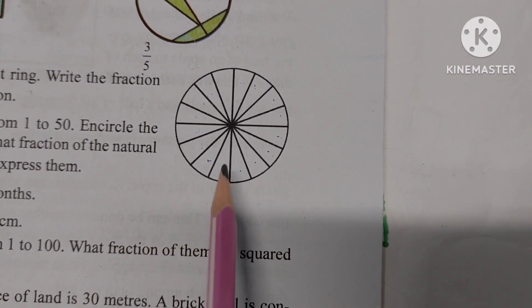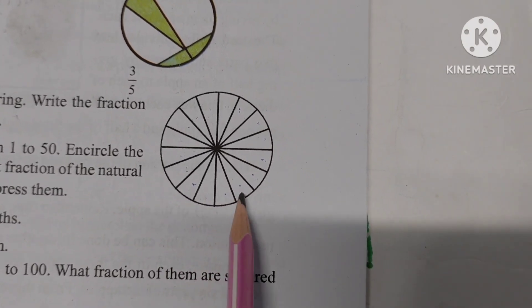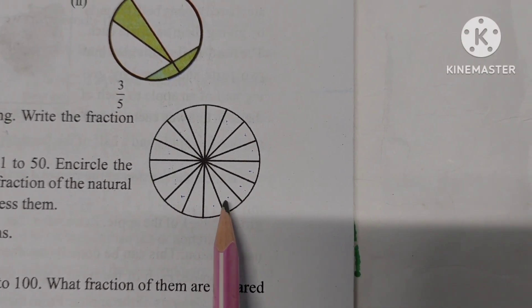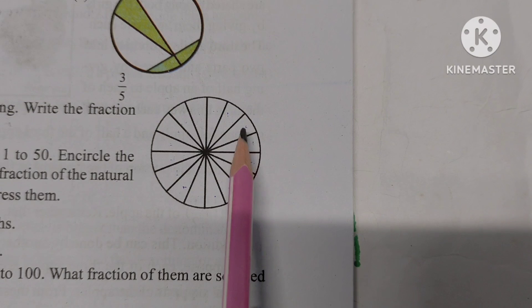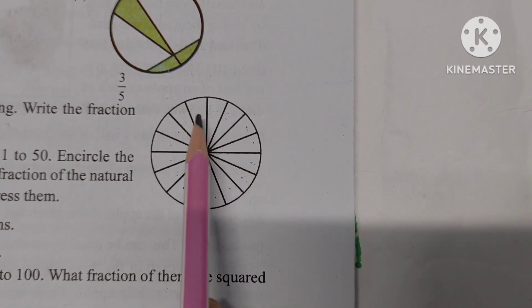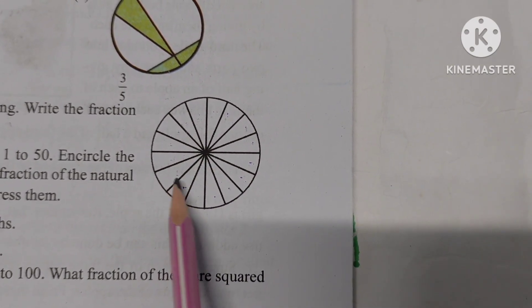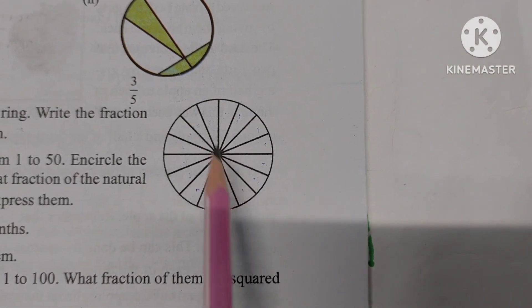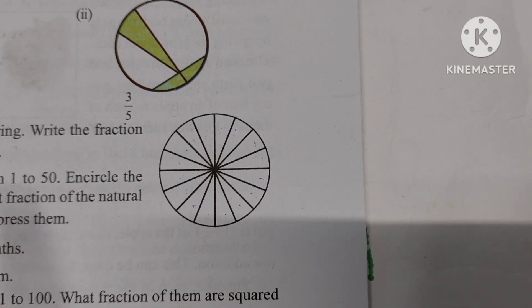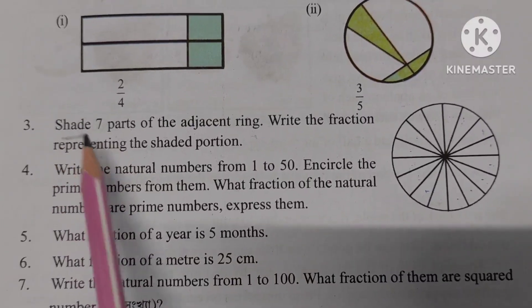First we have to count the total parts: 1, 2, 3, 4, 5, 6, 7, 8, 9, 10, 11, 12, 13, 14, 15, 16. There are 16 parts. Out of 16, seven parts are shaded.